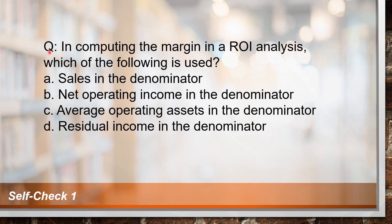Self-check number one: In computing the margin in an ROI analysis, which of the following is used? A, sales in the denominator. B, net operating income in the denominator. C, average operating assets in the denominator. Or D, residual income in the denominator.